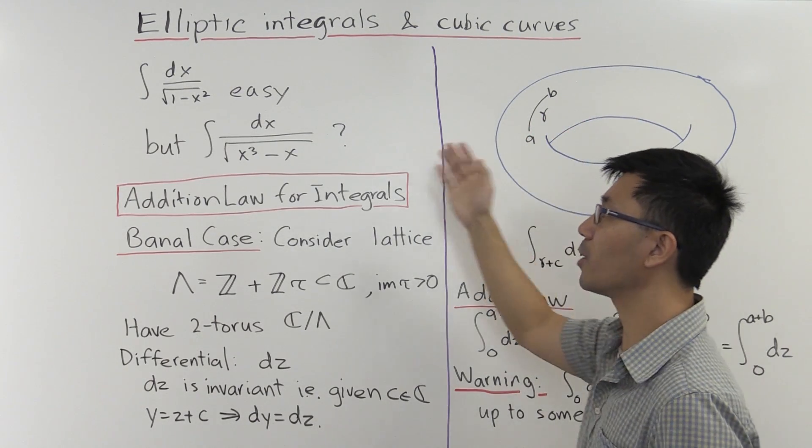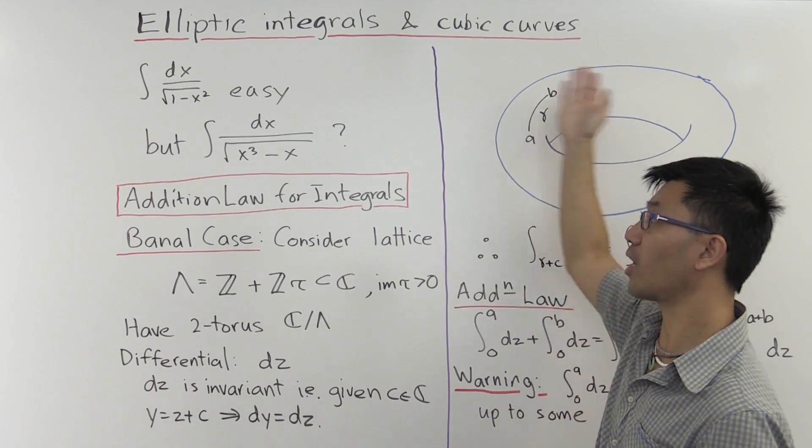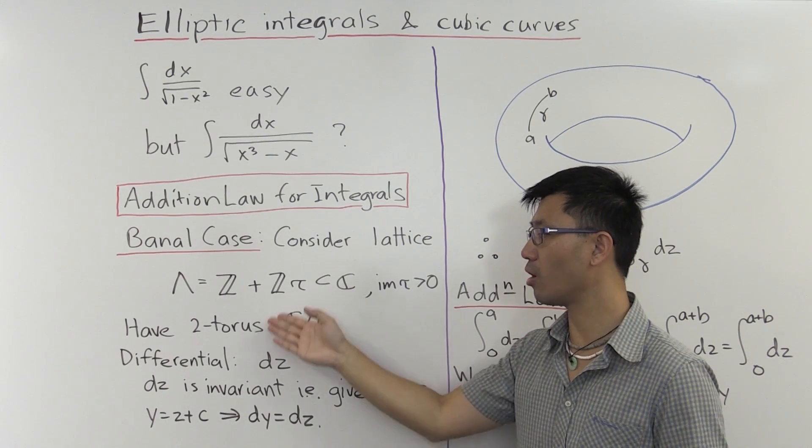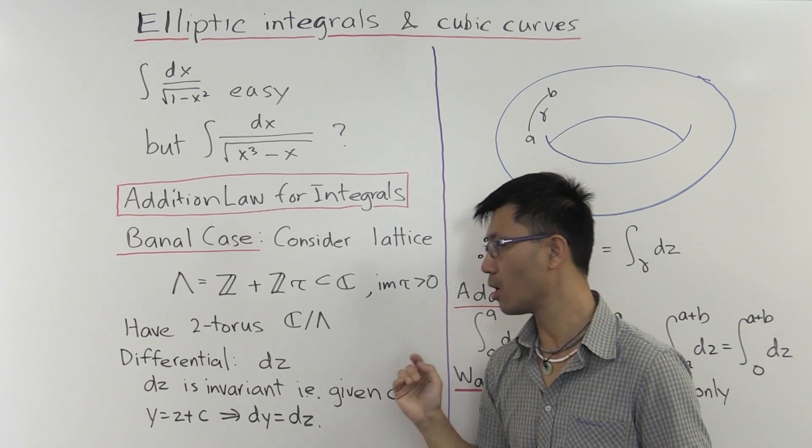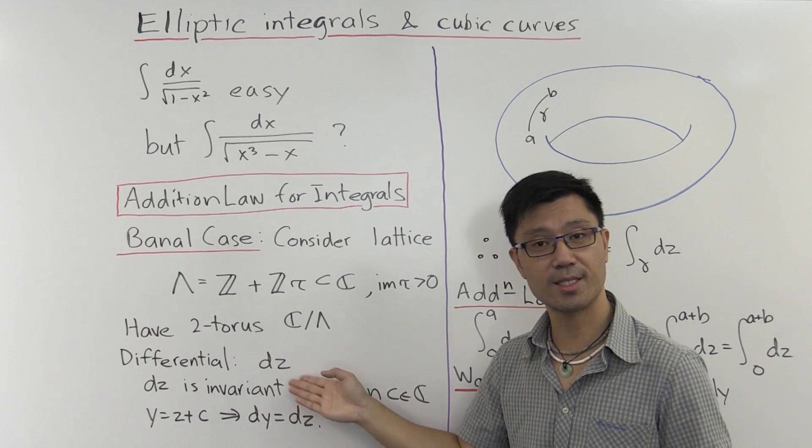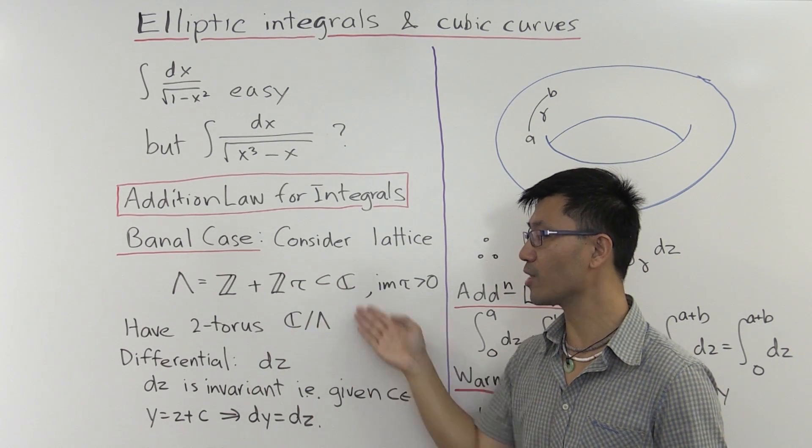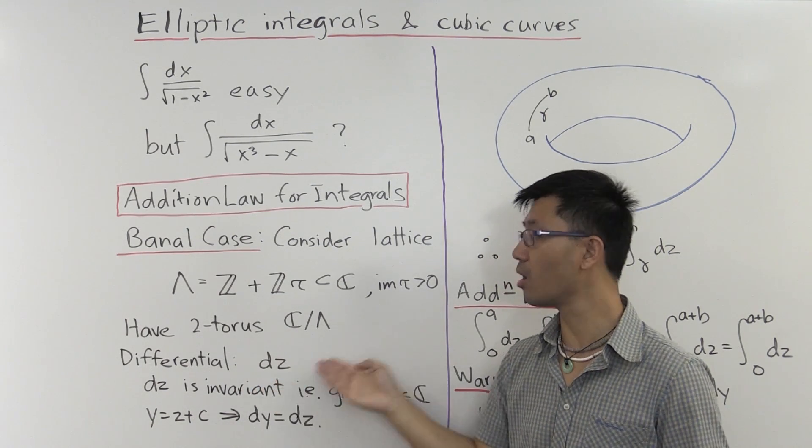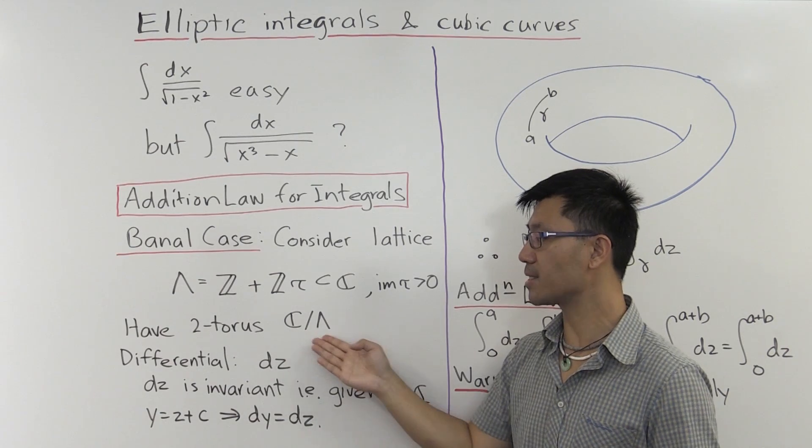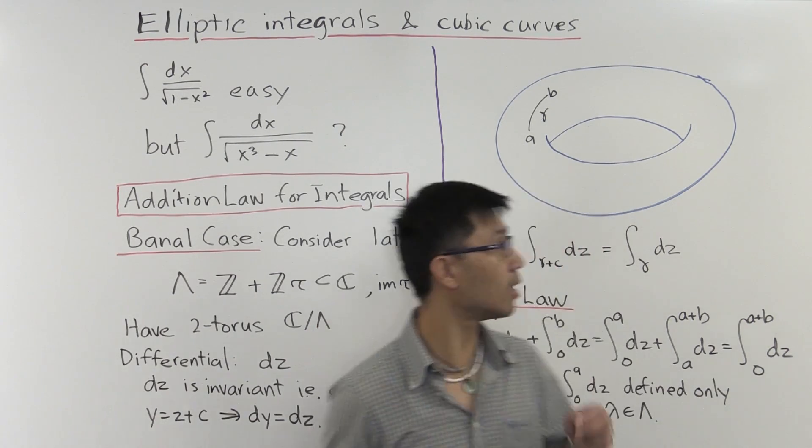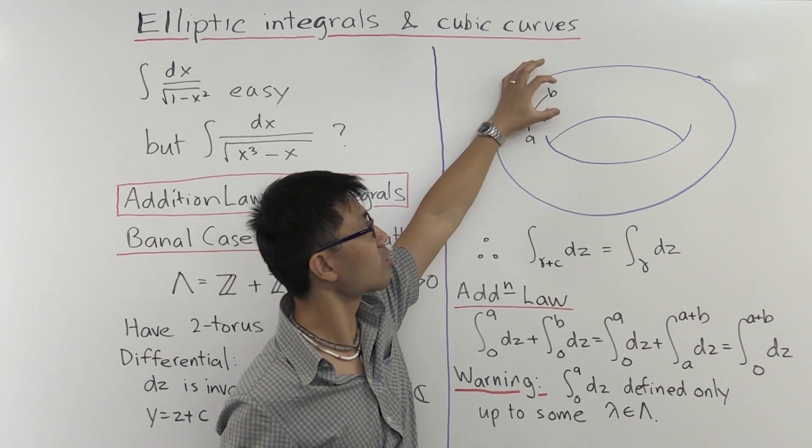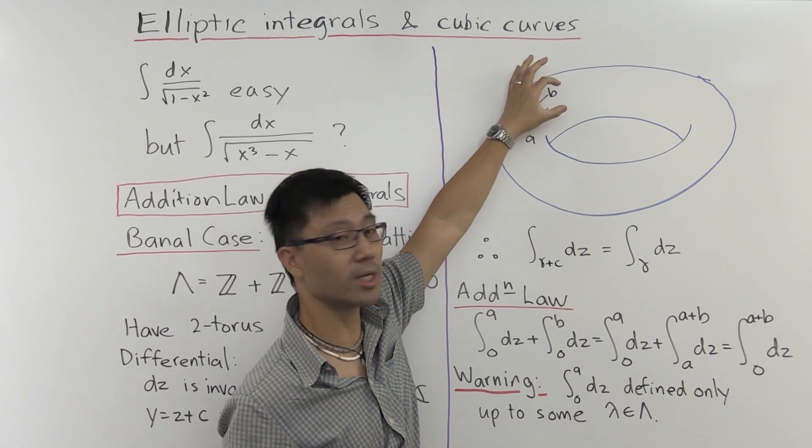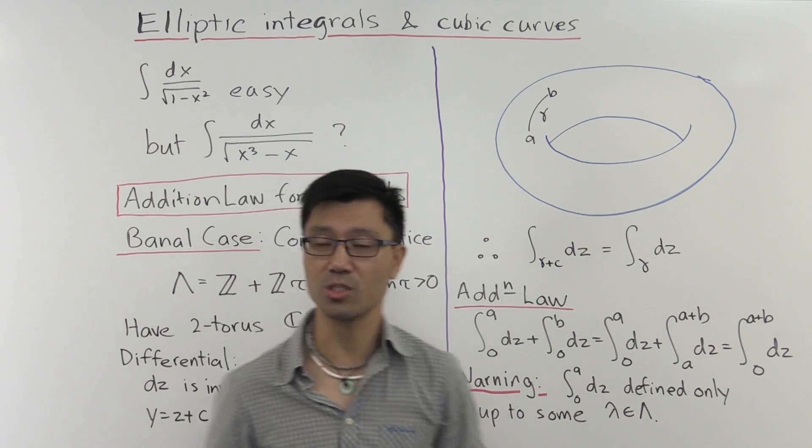Now we want to do some integration on this two-torus here. Well, it turns out that the usual differential dz on C, of course, gives you a differential on C mod Λ. So in other words, this is just a way of integrating things on here. And basically it works because locally, on this C mod Λ, on this two-torus, it just looks like an open subset of C in the neighbourhood of each point. And so you can do integration on that open neighbourhood as usual.